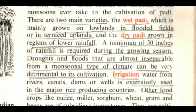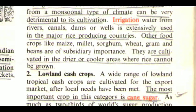There are two main varieties: the wet paddy, mainly grown on lowlands in flooded fields or in terraced uplands, and the dry paddy, grown in regions of lower rainfall. A minimum of 50 inches of rainfall is required during the growing season. Droughts and floods, almost inseparable from a monsoonal type of climate, can be very detrimental to its cultivation. Irrigation water from rivers, canals, dams, or wells is extensively used in major rice-producing countries. Other food crops like maize, millet, sorghum, wheat, gram, and beans are of subsidiary importance, cultivated in the drier or cooler areas where rice cannot be grown.